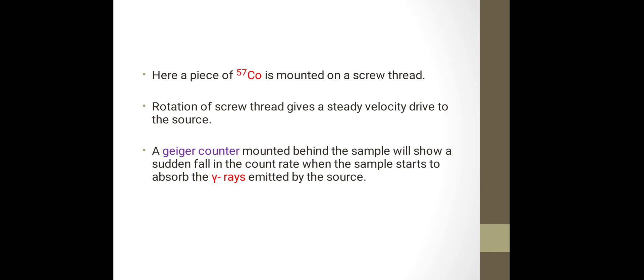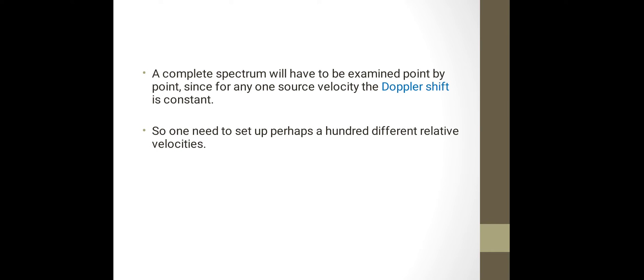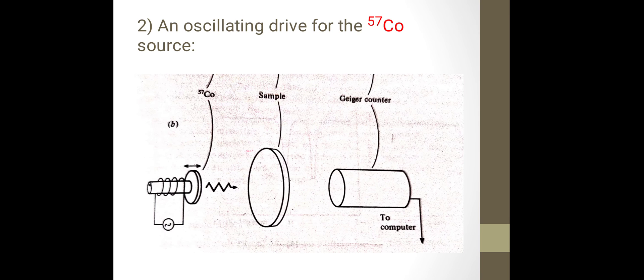This is about a screw thread drive for the cobalt-57 source. The second experimental arrangement is an oscillating drive for the cobalt-57 source. See in the diagram there is a cobalt-57 source, this is a sample and this is a Geiger counter. This is a much more convenient arrangement than the screw thread drive.